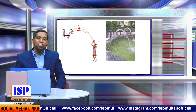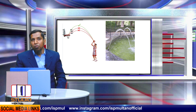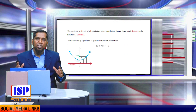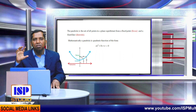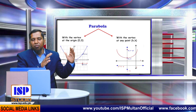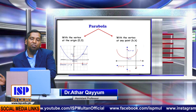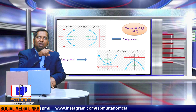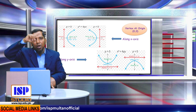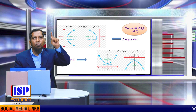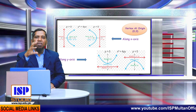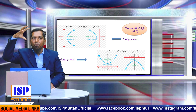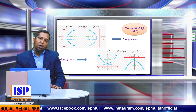In summary: a parabola is a set of points equidistant from a fixed point (focus) and a fixed line (directrix). There are two main cases — vertex at origin and vertex at any point (h,k). If x is linear, the parabola is about the x-axis; if y is linear, it is about the y-axis. Along the x-axis: p positive opens right, p negative opens left. Along the y-axis: p positive opens up, p negative opens down. Thank you.